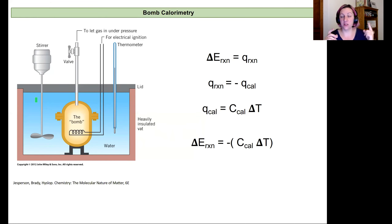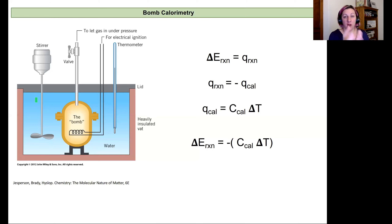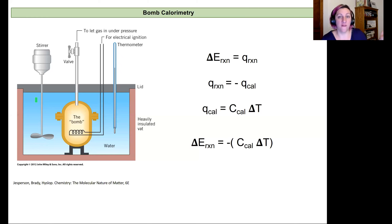Around that constant-volume bomb is water that fills the vat, with a stirrer to keep it at a uniform temperature so that as it absorbs heat, that heat distributes evenly throughout all the water. You have a thermometer measuring the temperature of the water outside the fixed-volume device, and you look at the change in temperature of that water, which represents the heat absorbed or released into the bomb part of the calorimeter.